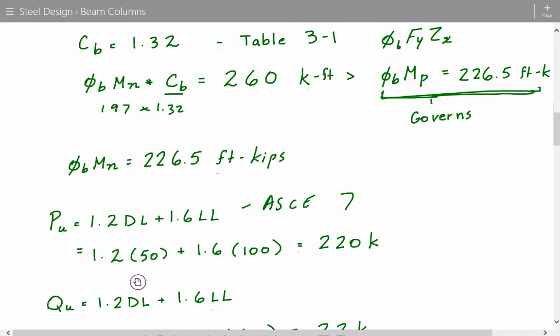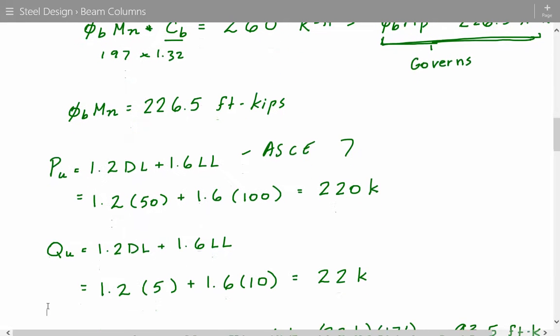And we do the same thing for the transverse load. 1.2 times 5 kips plus 1.6 times 10 kips. This gives us 22 kips as our factored transverse load.